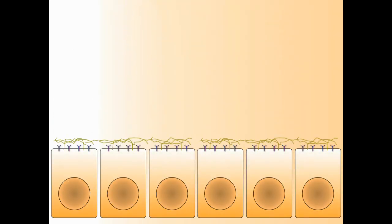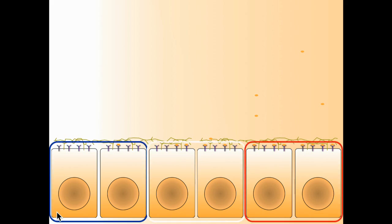If we see it in detail, we have some cells of the wing imaginal disk, and once DPP is secreted into the extracellular space, it will move around, reach the receptors, and activate the downstream targets and the signaling pathway. This produces what was described by Lewis Wolpert as the French flag model, in which different thresholds of the morphogen will produce different groups of cells that will determine, in the end, the structures of the wing.